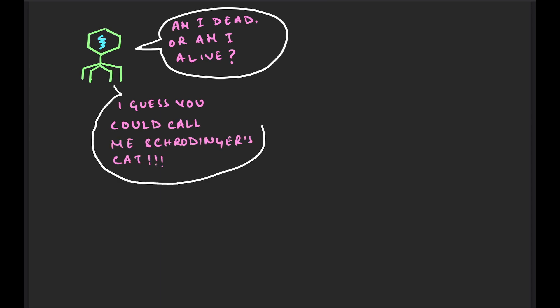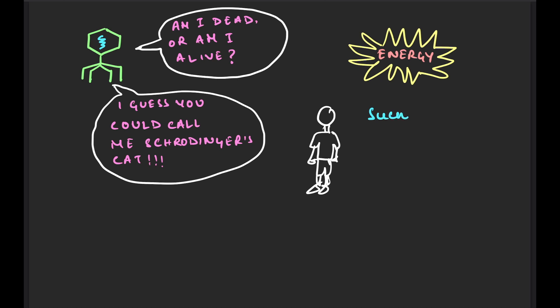For any living thing, in order to live, they must produce energy. Say, for example, in a human, energy is created by conversion of sucrose into glucose and then into energy.